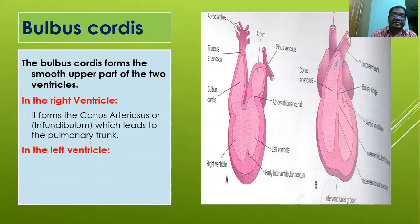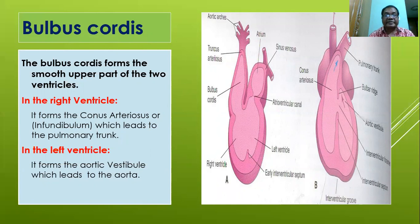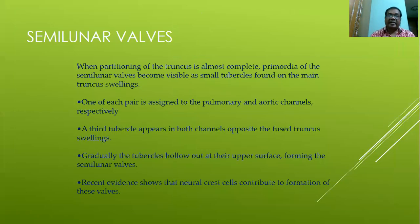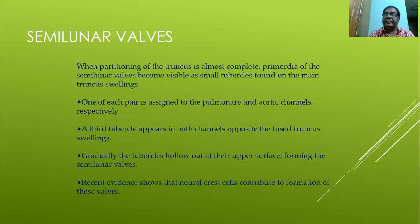The bulbus cordis forms the smooth upper part of the two ventricles. In the right ventricle it forms the conus arteriosus or infundibulum, which leads to the pulmonary trunk; in the left ventricle it forms the aortic vestibule, which leads to the aorta. Regarding semilunar valves: when partitioning of the truncus is almost complete, primordia of the semilunar valves become visible as small tubercles on the main truncal swellings, one of each pair assigned to the pulmonary and aortic channels respectively. A third tubercle appears in both channels opposite the fused truncal swellings; the tubercles hollow out at their upper surface forming the semilunar valves. Recent evidence shows that neural crest cells contribute to the formation of these valves.